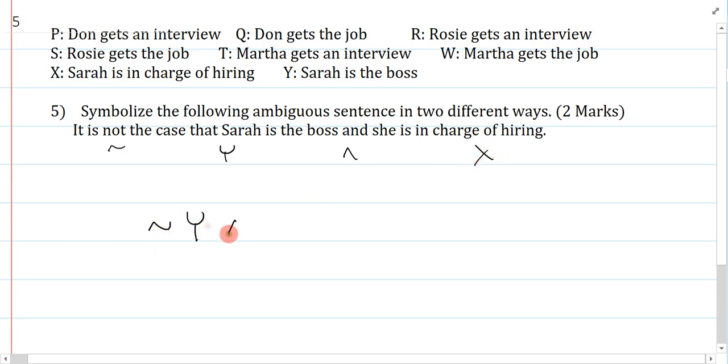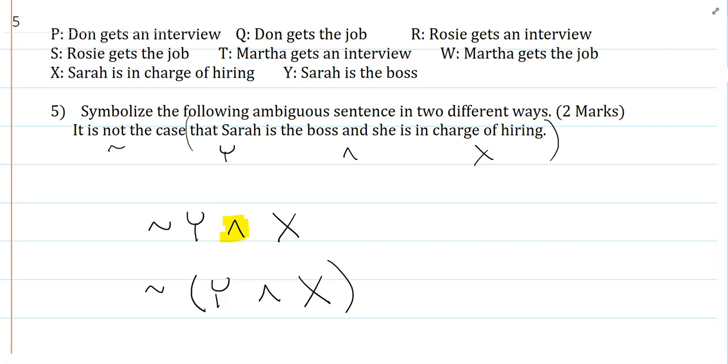So, one way to symbolize this is to say like this, not Y and X. So, in this case, we actually think it's not the case only modifies Sarah is the boss. But notice, without a comma, it could be that it's not the case actually modifies the entire thing like this. So, the other way to symbolize it is like so. In the first example, the and is the main connective. In the second example, the negation is the main connective. And that's how we play around with the ambiguity of this sentence. It's not clear if the negation is modifying the entire thing or just the first part of the conjunction.